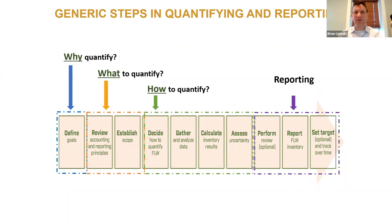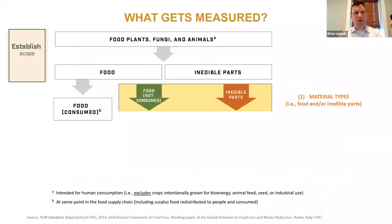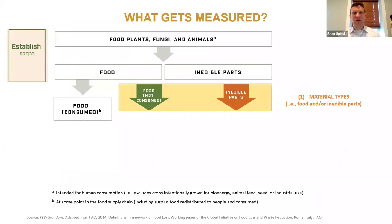Each of those questions is a separate chapter within the standard. If any area is of particular interest, I encourage you to look at the standard itself — I'll share the link shortly. Now, this is a great moment to understand what we mean by 'food waste' or 'food loss and waste.' At the top of the diagram, we have all the food, plants, fungi, and animals intended for human consumption — not plants grown for bioenergy or animal feed, just what's intended for people to eat.